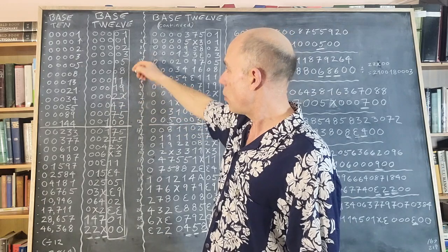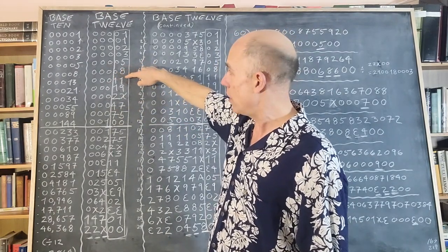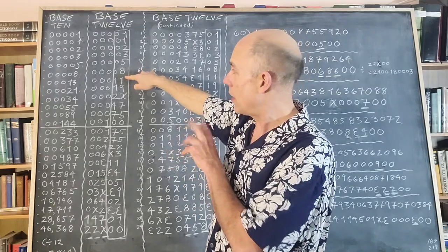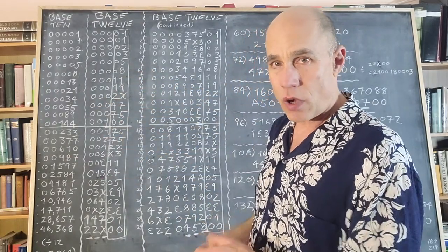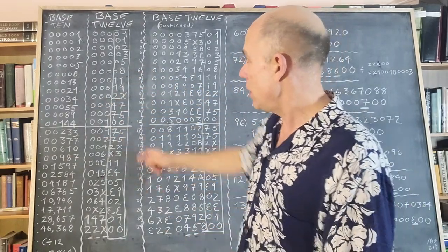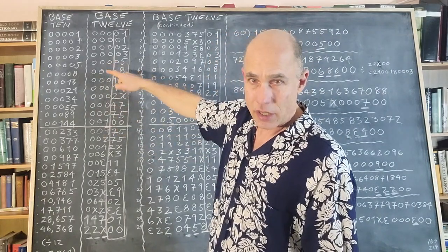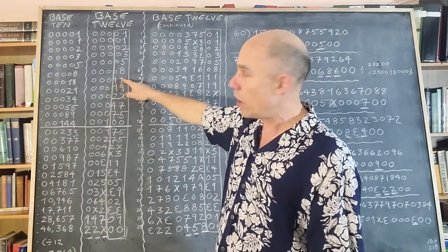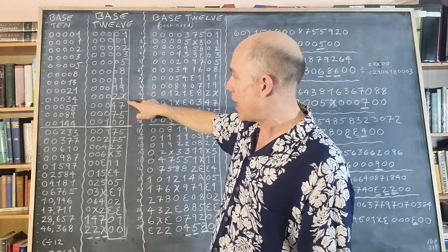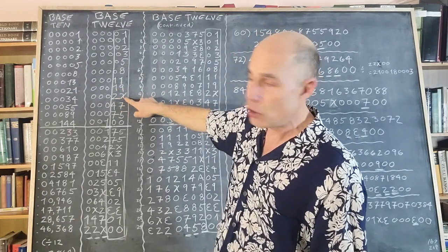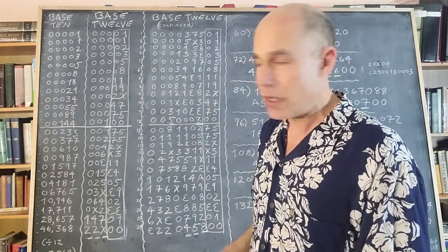34 in base 12 is one group of 12 plus 1, which looks like 11. We say DOE 1 in base 12 — this column is dozens. So we're calling it DOE 1, DOE 9, 2 DOE DEC. This numeral that looks like an X is called DEC.